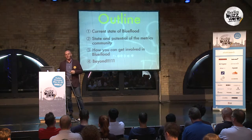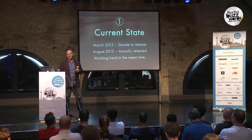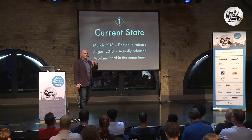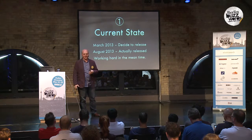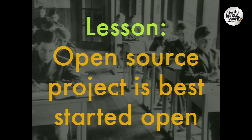We decided to release Blue Flood in March of last year. We thought it would be a quick process, maybe take us a month — it ended up taking us almost five months. We've been working really hard since then to make it better. That was a big learning process because we thought it would be just a simple act of moving code from one repository to another, but there are problems with dependencies, coupling you didn't think about, and assumptions in the code that make it difficult.